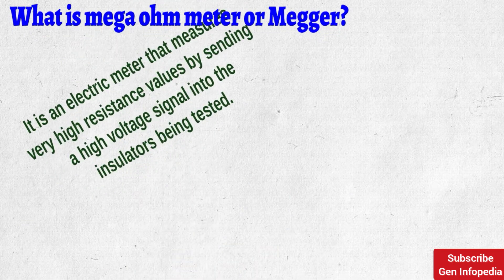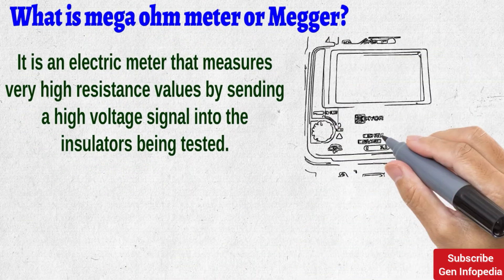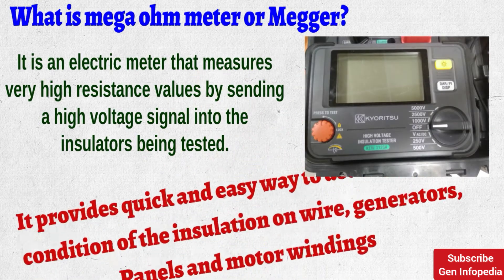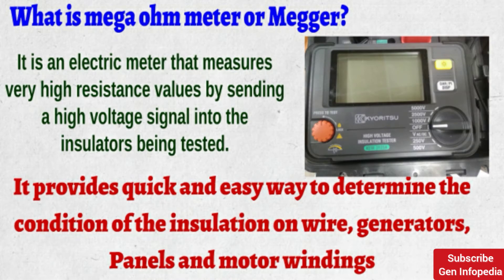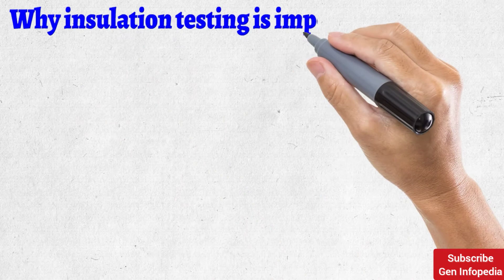A megaohmmeter is an electric meter that measures very high resistance values by sending a high voltage signal into the insulators, providing a quick and easy way to determine the condition of the insulation on wires, generators, motor windings, and transformer windings. This megaohmmeter has a built-in direct current generator — when making an insulation resistance test, a high DC voltage is applied to the conductor under test and the resulting current flow is measured.